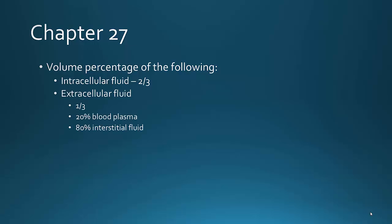The extracellular fluid is the other one-third. However, the extracellular fluid can be divided into blood plasma and interstitial fluid. 20% is blood plasma and 80% is interstitial fluid. So these are percentages that you need to know.